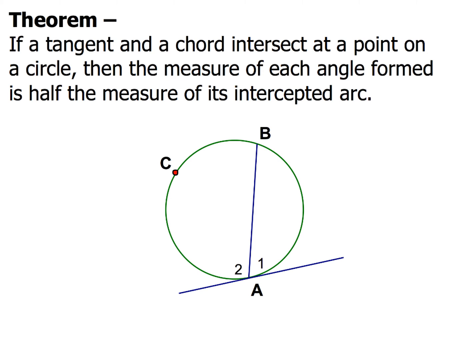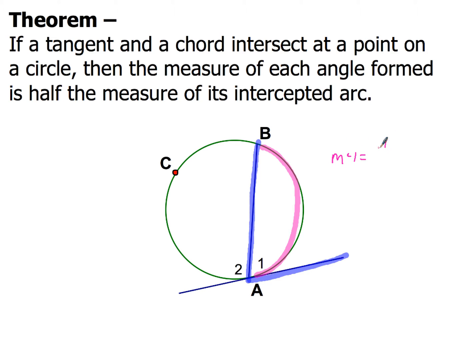It says if a tangent and a chord intersect at a point on a circle, the measure of each angle formed is half the measure of the intercepted arc. You might be looking at yourself like, what is all that crazy talk? So check this out, it's pretty straightforward. You've got this angle right here — angle number one. There's the chord and there's the part of the tangent where they intersect. Angle number one is going to be half of this intercepted arc right here. So the measure of angle one is going to be half of whatever the measure of arc BA is.